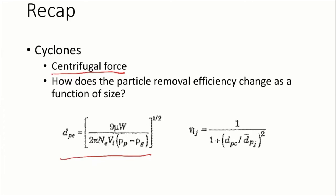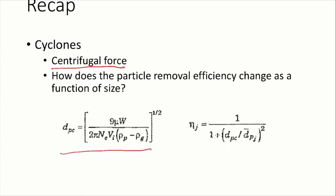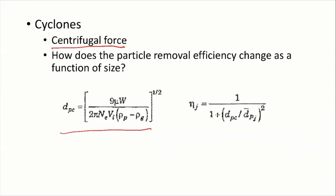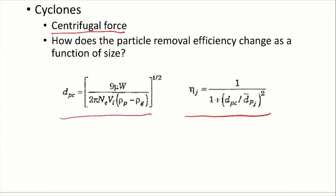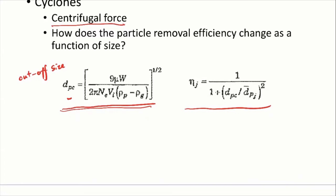From that quiz problem, we should bear in mind that the cyclone efficiency increases with particle size. From a theoretical point of view, that's decided by these two equations. With any geometry or working condition of the cyclone, we should be able to calculate the cutoff size. The cutoff size is the characteristic size corresponding to each working condition of the cyclone, and at this cutoff size the collection efficiency is 50%.